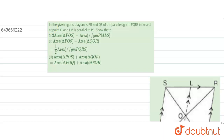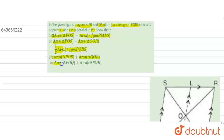In the given figure, diagonals PR and QS of the parallelogram PQRS intersect at point O. LM is parallel to PS. Show that: (1) two times area of triangle POS is equal to area of parallelogram PMLS; (2) area of triangle POS plus area of triangle QOR is equal to half of area of parallelogram PQRS; (3) area of triangle POS plus area of triangle QOR is equal to area of triangle POQ plus area of triangle SOR.